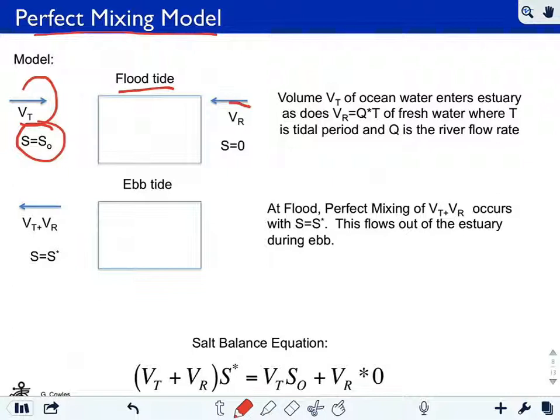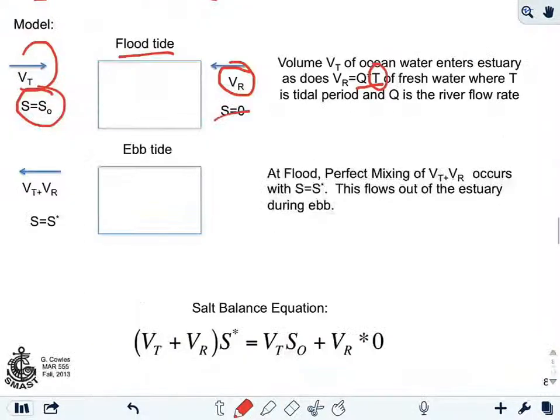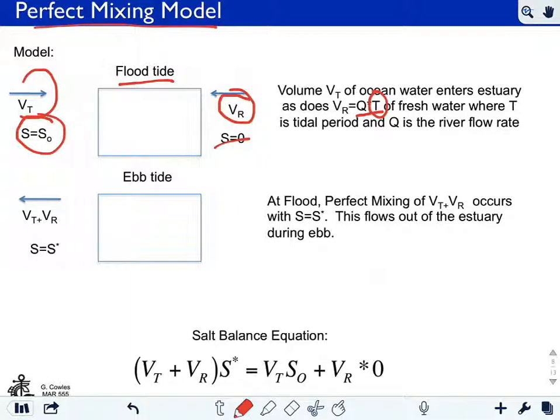During that flood tide, you have an amount of fresh water coming in, VR, which is equal to the river discharge times the tidal cycle. So we're considering how much fresh water comes in over an entire tidal cycle. We're going to put it all in during the flood tide. That naturally has a salinity of zero.